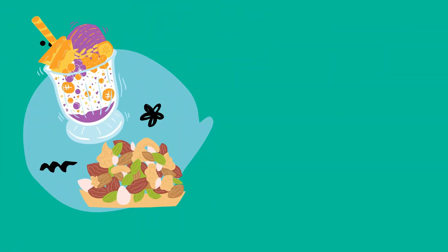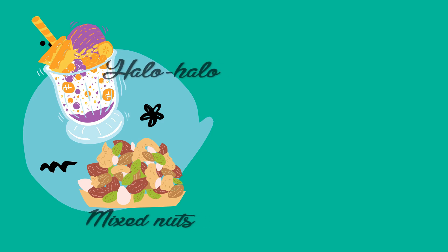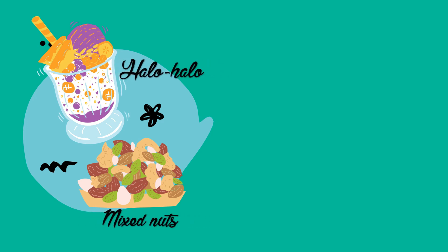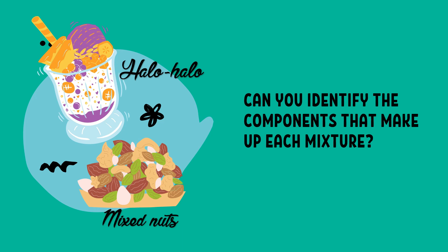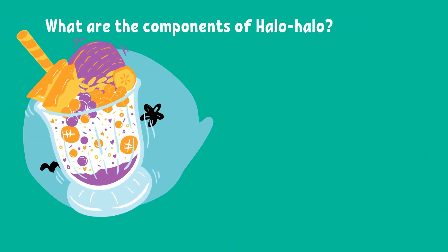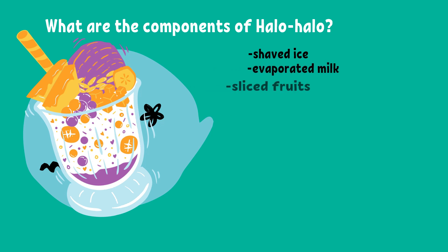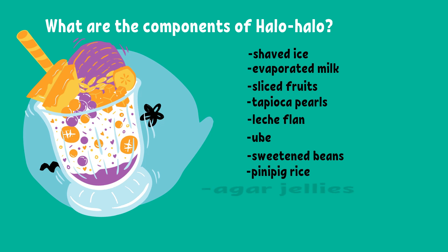What are the mixtures that you can see in the pictures? Correct — halo-halo and mixed nuts. Can you identify the components that make up each mixture? The components of halo-halo are shaved ice, evaporated milk, sliced fruits, tapioca pearls, leche flan, ube, sweetened beans, pinipig rice, and agar jellies.